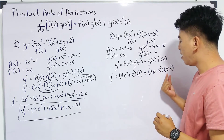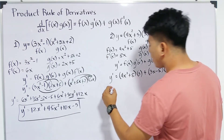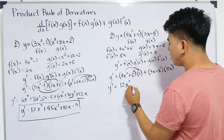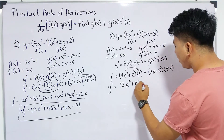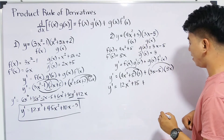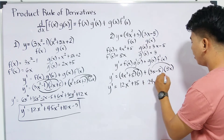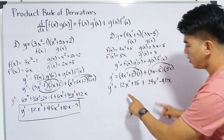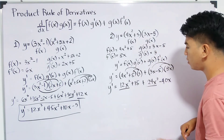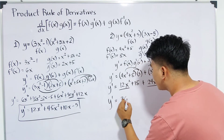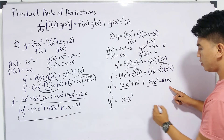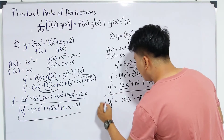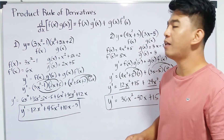Since we have monomials, we use the distributive property. y prime is equal to: 3 times 4x squared is 12x squared; 3 times 5 is plus 15. Then, 8x times 3x is 24x squared; 8x times negative 5 is negative 40x. Combining like terms: y prime is equal to 36x squared minus 40x plus 15. This is now the derivative of the second given function using the product rule.